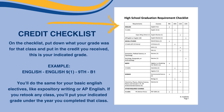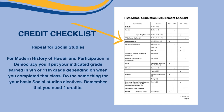You'll need to do the exact same for your basic English electives like expository writing or AP English. If you retook any classes, you'll put your indicated grade under the year that you completed the class. For social studies, you'll do the same thing. For modern history of Hawaii and participation in democracy, you'll put your indicated grade earned in ninth or eleventh grade depending on when you completed that class. Do the same for your basic social studies electives. Remember that you need four credits.